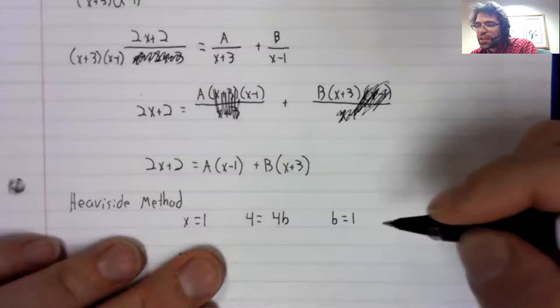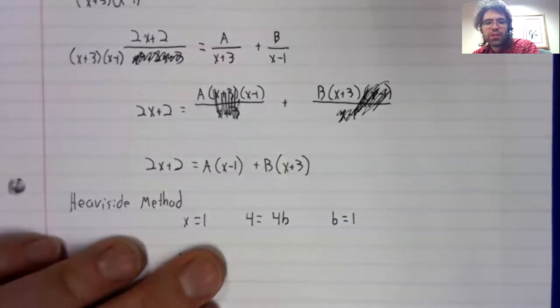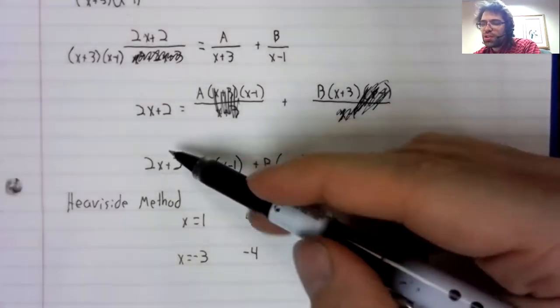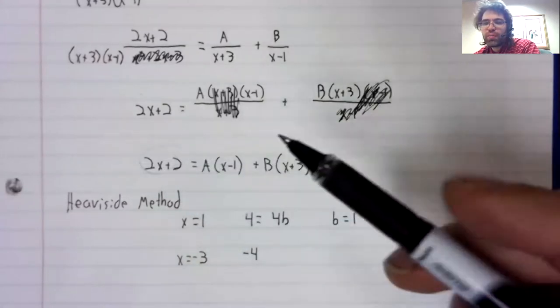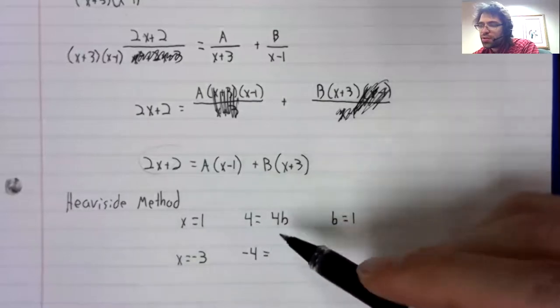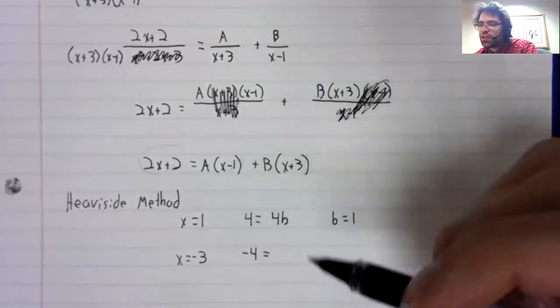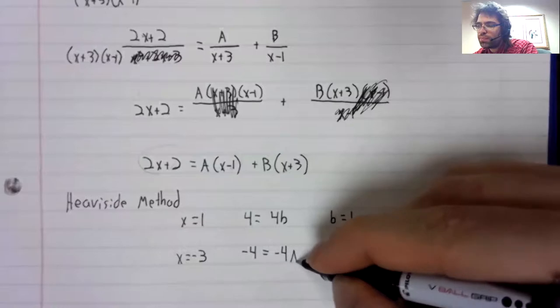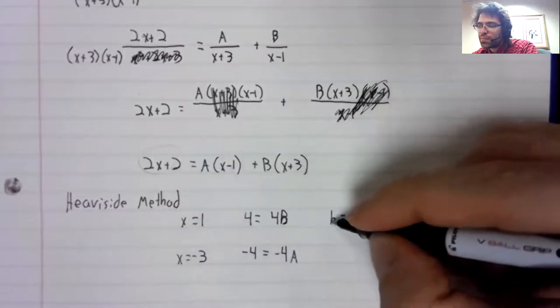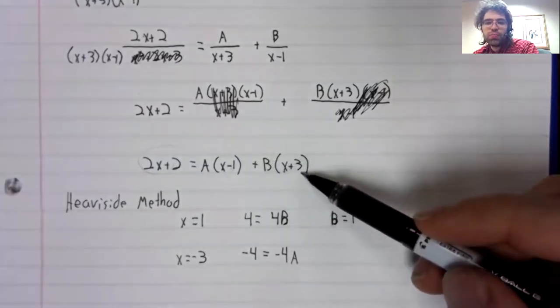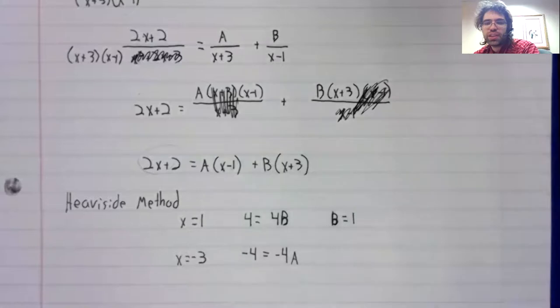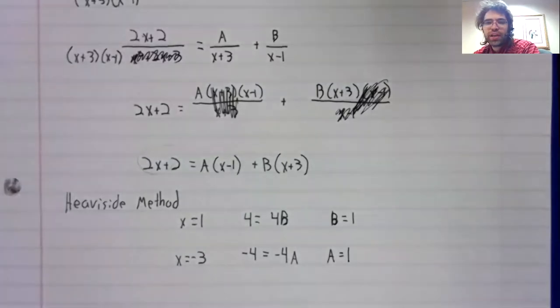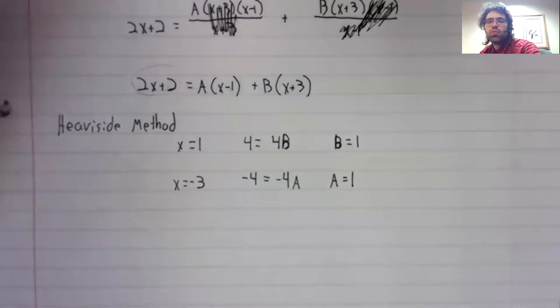And if we let x be negative three, now this becomes negative four. Let's see, negative three minus one. This also becomes negative four. This becomes a zero when you stick negative three in here. So A and B are both one.